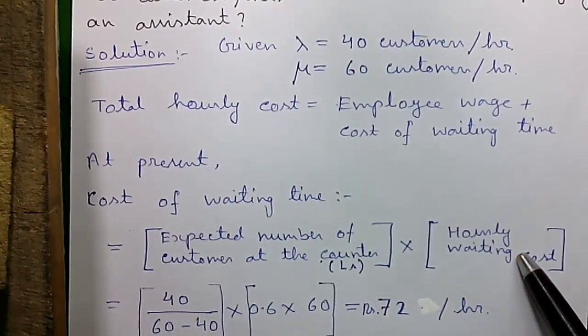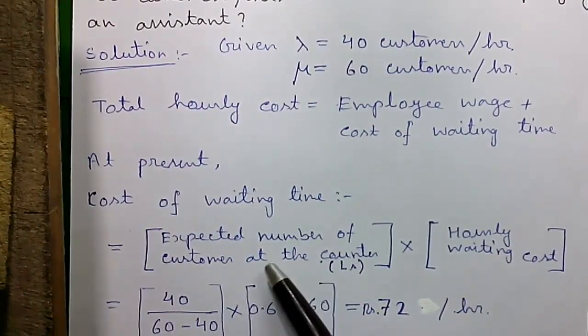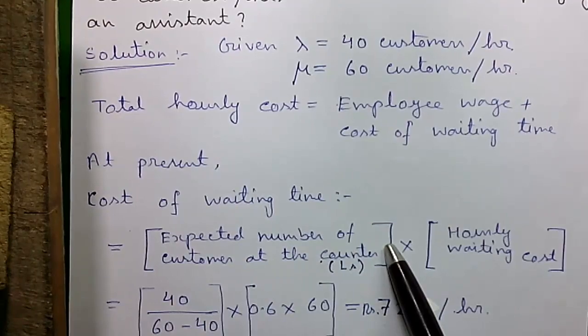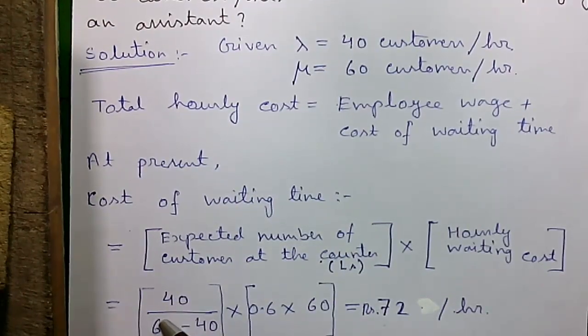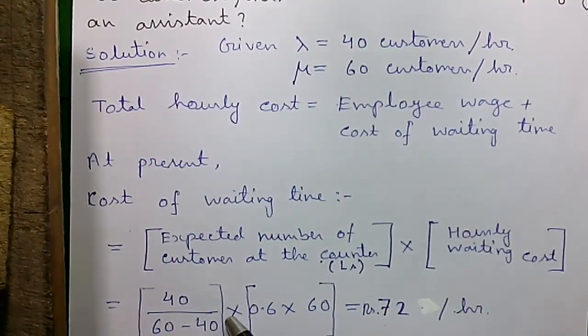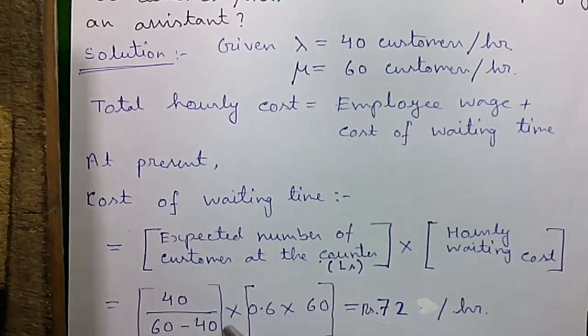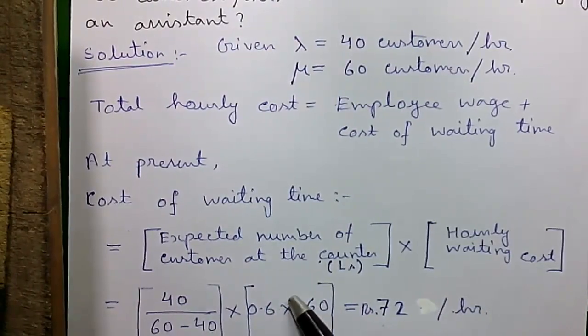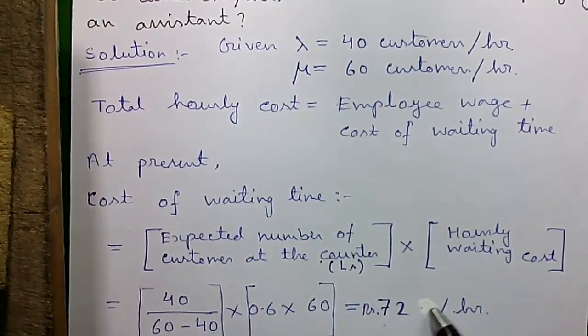So the expected number of customers at the counter is given by 40 divided by 60 minus 40, that is lambda divided by mu minus lambda, times 0.6 per minute times 60 minutes in an hour. That equals Rs. 72 per hour.